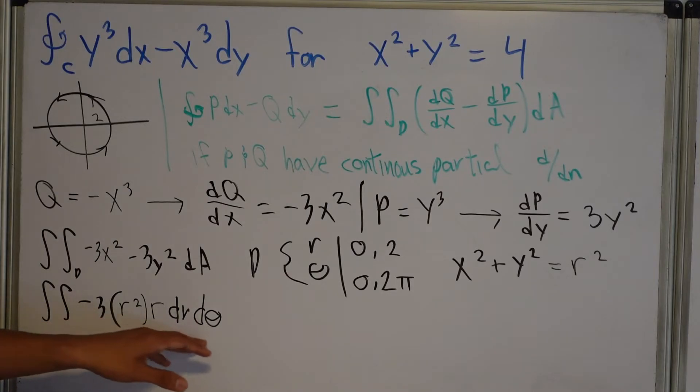dR dθ. So now we're integrating in this dR and dθ plane, and this is our new integral. And what's our bounds here? Well, it would be 0 to what? To 2. And this would be from 0 to 2π.